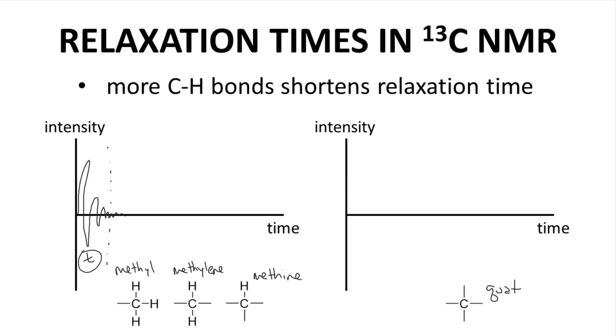They ring quietly and take a long time to stop. The spectrometer does not wait long enough for the full signal to be released, so the intensity for a quaternary carbon is much less.